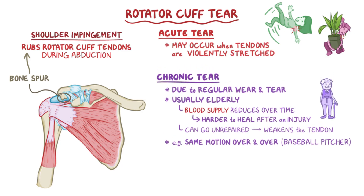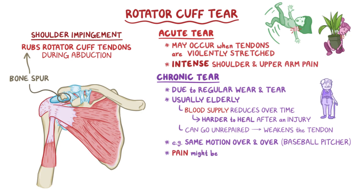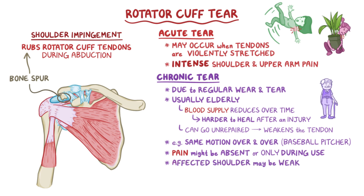In an acute tear, there can be intense shoulder or upper arm pain, whereas in a chronic tear, the pain might be absent or only occur when using the affected shoulder. The affected shoulder may also be weak, specifically with abduction or rotation.